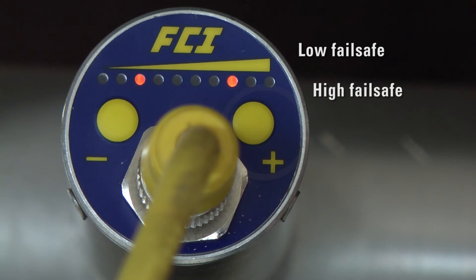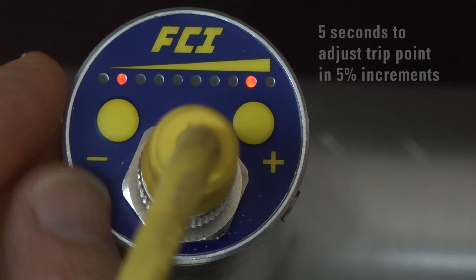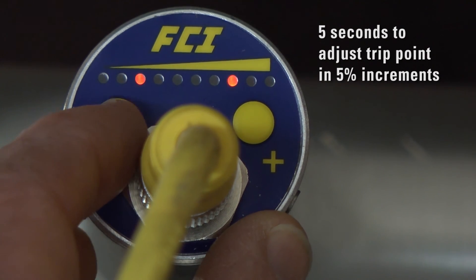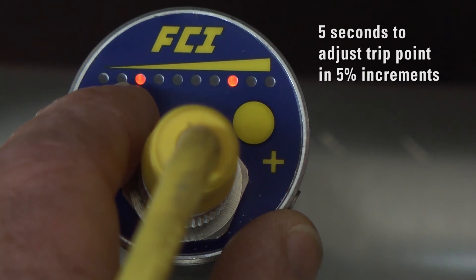The default alarm setting in this mode is 30% of the range. However, the operator has 5 seconds to adjust the trip point in 5% increments either up or down using the buttons.